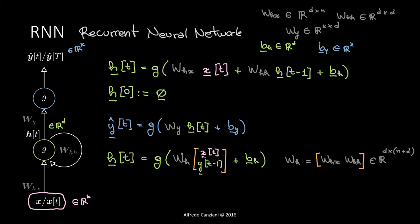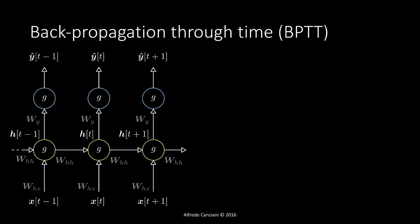A recurrent neural network can be easily converted back to a standard neural network when the matrix Whh is set to the null matrix. If the input sequence contains no temporal dependencies, the network can converge to a system where the memory matrix is zero and the system becomes purely combinatorial. To train the system, we simply apply forward propagation, backpropagation, and gradient descent — nothing changes from the way we have been training our networks so far.